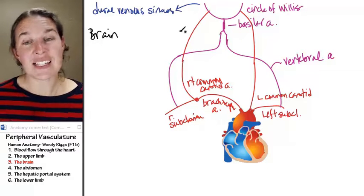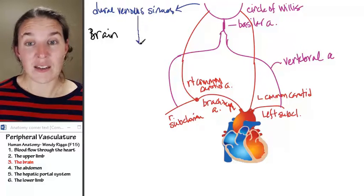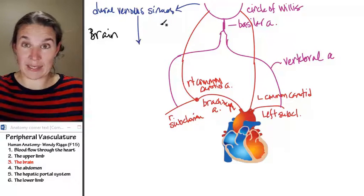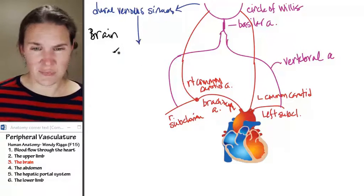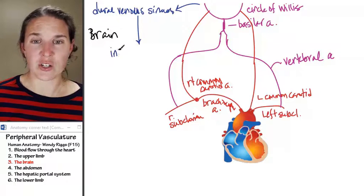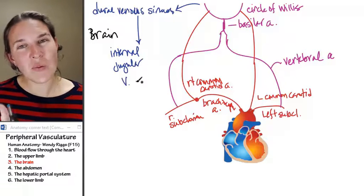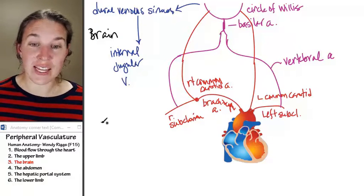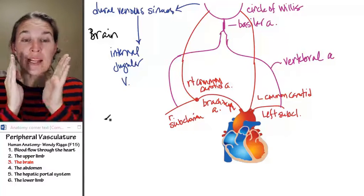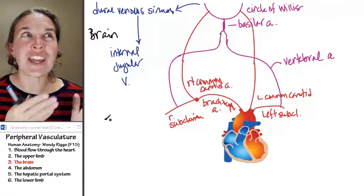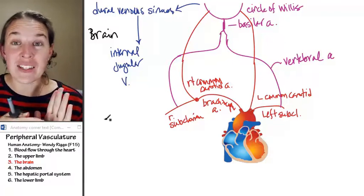The dural venous sinuses ultimately drain into the internal jugular vein. And what do you remember about internal jugular veins? They're draining and they flow, they join with subclavian vein.